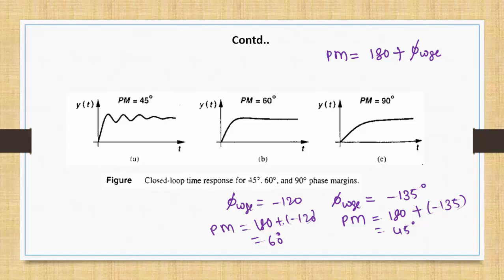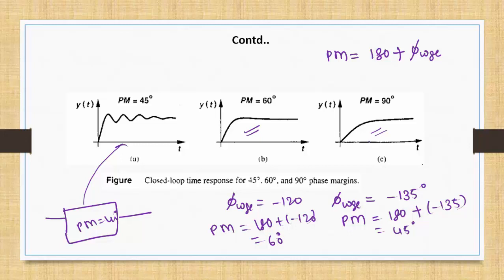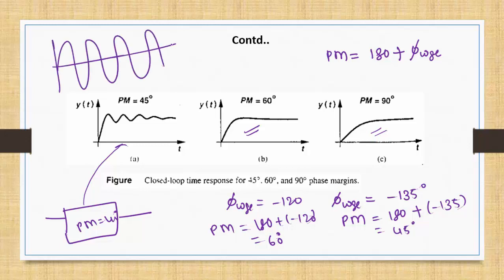Correlating with time-domain step responses: a phase margin of 45° gives a moderately oscillatory step response; 60° gives less overshoot; 80-90° gives a very smooth response. A phase margin of 0° produces a sustained oscillation. This is how we measure the stability of the system.